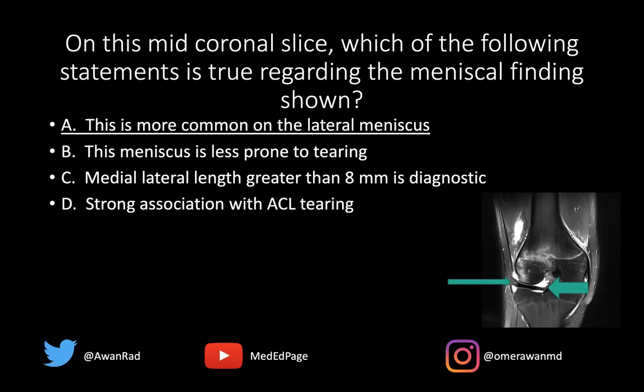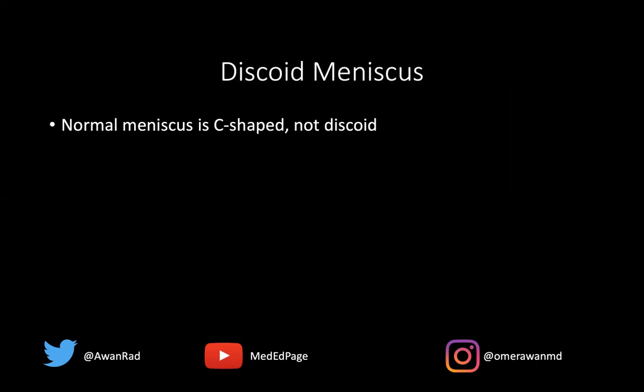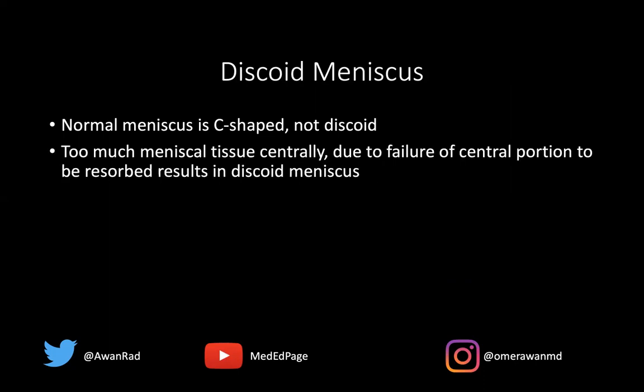This is a nice example of what a discoid meniscus looks like. A normal meniscus is C-shaped, but when you have too much meniscal tissue centrally, it looks like a disc — that's a discoid meniscus. This happens because of a failure of resorption of that central tissue in embryology; the central part fails to be resorbed, leading to a discoid meniscus.